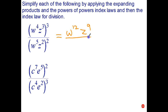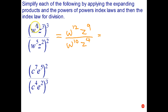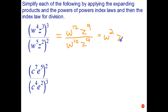W to the fifth, all squared, is W to the five times two which is ten. Z squared, squared, is Z to the power of two times two which is four. So when we raise a power to a power we multiply the indices. W to the twelfth divided by W to the tenth is W to the twelve minus ten, which is two. Z to the ninth divided by Z to the fourth is Z to the nine minus four, which is five. So all of that simplifies to W squared times Z to the fifth.